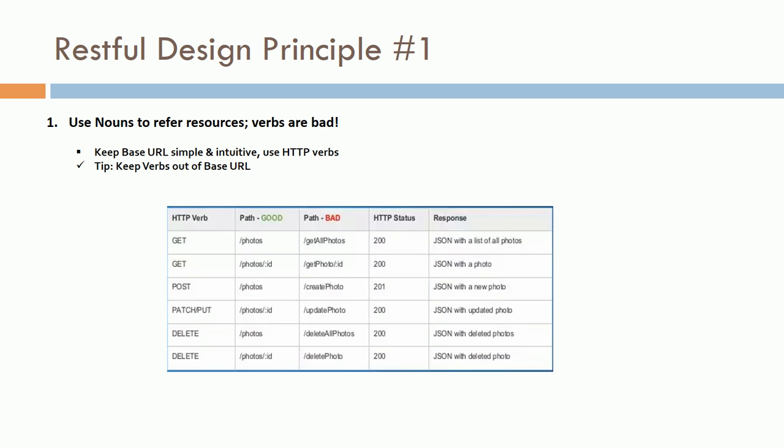The first principle is the use of nouns in your web URI. A noun here is a resource. When you are designing an application — let's suppose I am designing an application which will list all the products — in my web application, product is my resource. Like in Amazon, you have different products: home appliances, books, movies, etc. We are going to use nouns to refer to those resources.